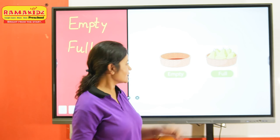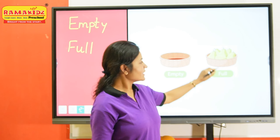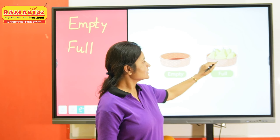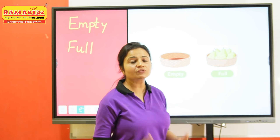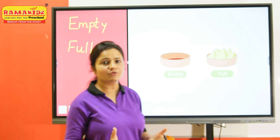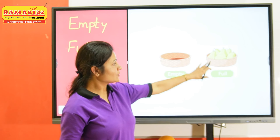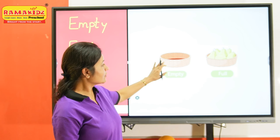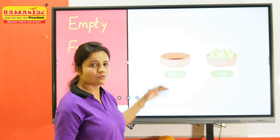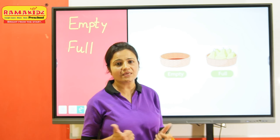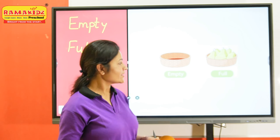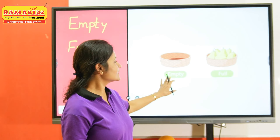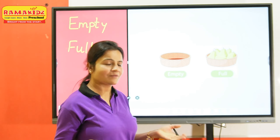So in this picture you can see there are two bowls. But in this bowl there are fruits. The bowl is full of fruit, so this bowl is full. But in this bowl you can see there is no fruit, nothing is there inside. So this bowl is empty.